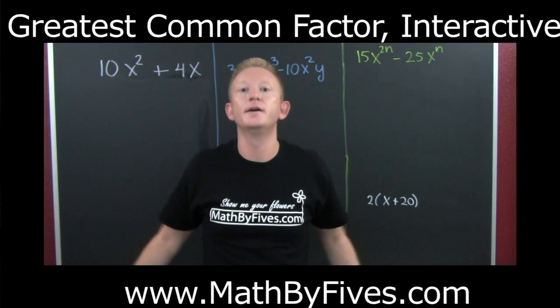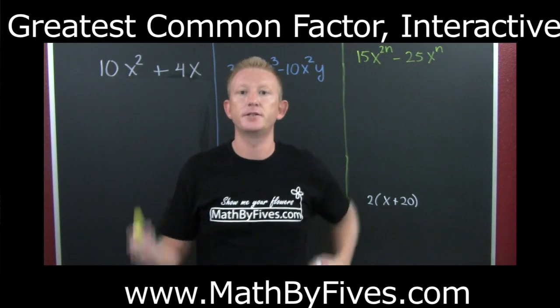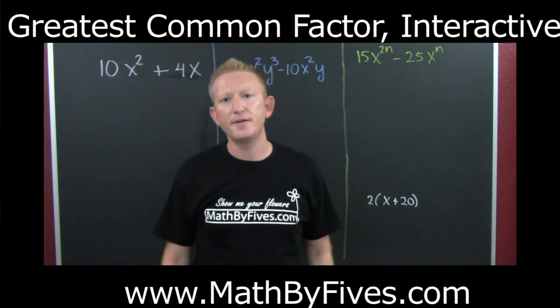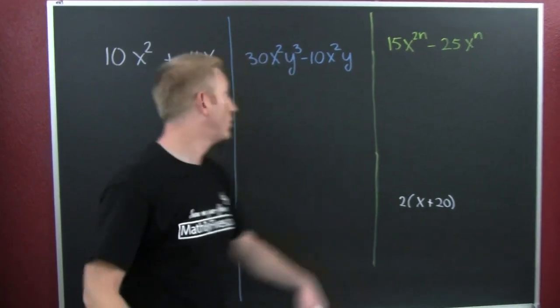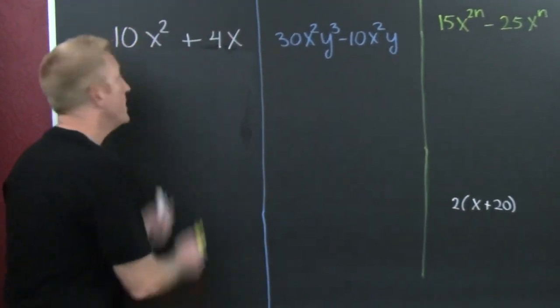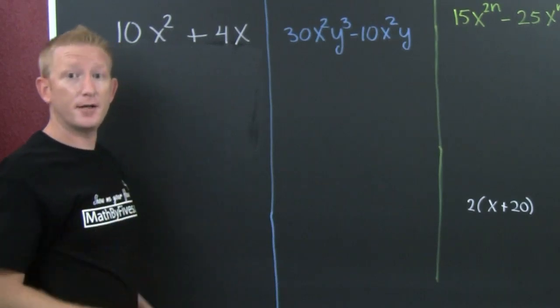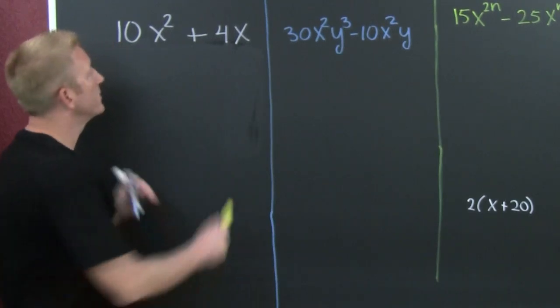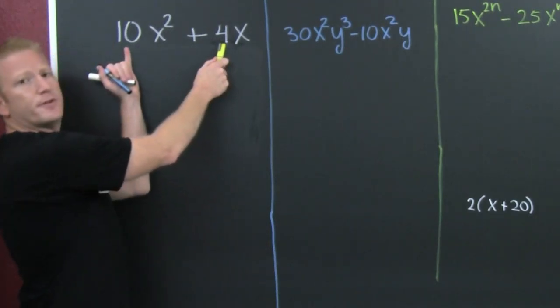The greatest common factor — the GCF, as it's known on the streets. If we take a look at this, we're trying to pull out a common factor. What's the biggest number that divides both of those numbers?